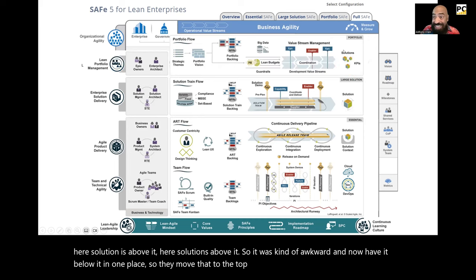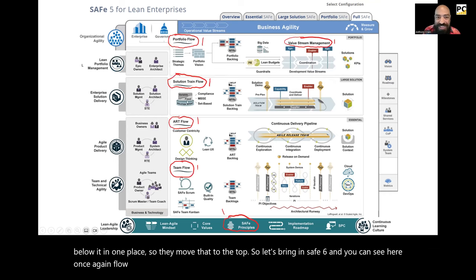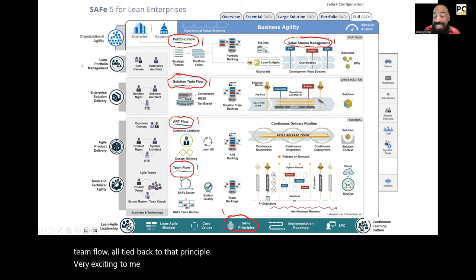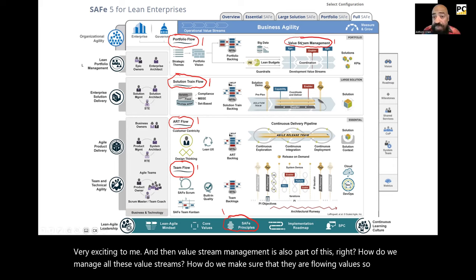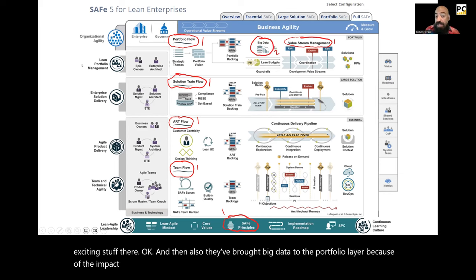Let's bring in SAFe 6. You can see here, once again — flow — this time of the portfolio. So we've got portfolio flow, solution flow, ART flow, team flow — all tied back to that principle. Very exciting. And value stream management is also part of this: how do we manage all these value streams and make sure they are flowing value? They've also brought big data to the portfolio layer because of the impact that big data has on strategy. So you'll see some articles on big data there.